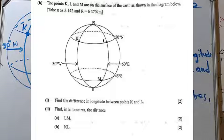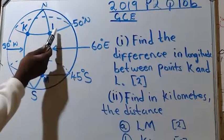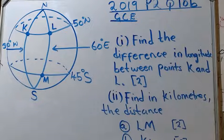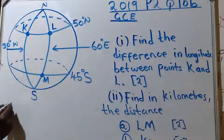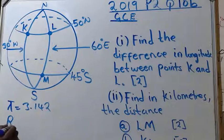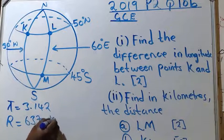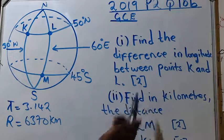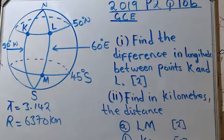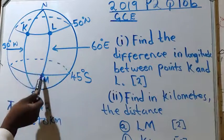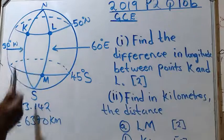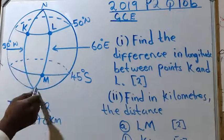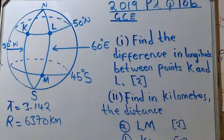The question reads: points K, L, and M are on the surface of the earth as shown in the diagram. Take pi to be 3.142 and the radius of the earth to be 6370 kilometers. Part (i): find the difference in longitudes between points K and L, carrying two marks. Part (ii): find in kilometers the distance — A) from L to M, which is along the line of longitude, and B) from K to L, which is along the line of latitude.